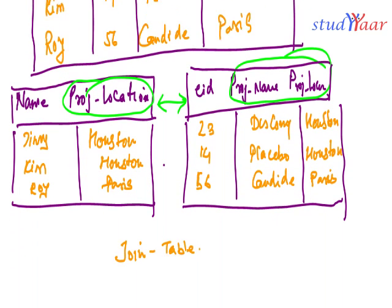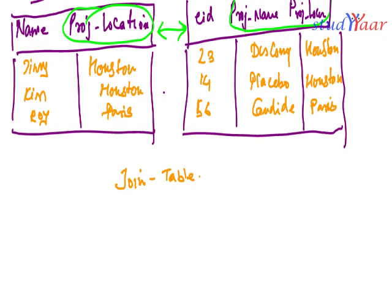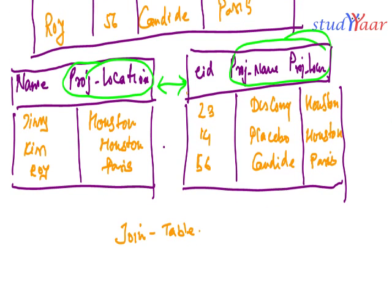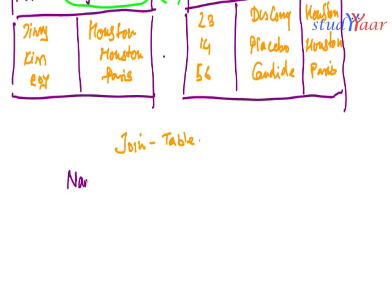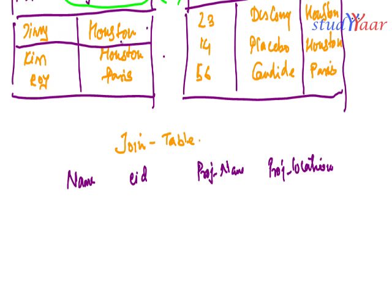This is very important — lossy decomposition and the generation of spurious tuples is a very important concept in normalization. In the join table I will have attributes: name, employee ID, project name, and project location. Now I'll take a join. Starting with Jimmy's tuple: name is Jimmy, project location is Houston.